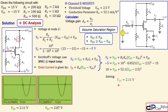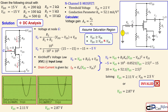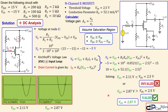The first solution, VGS = 2.11 V, is smaller than VT = 2.5 V, which violates the saturation condition, so it is not valid. The second solution, VGS = 2.87 V, is larger than VT and is therefore valid. Substituting VGS = 2.87 V into the drain current expression gives ID = 7.30 mA.